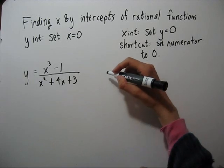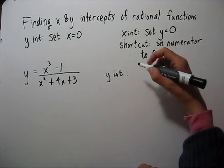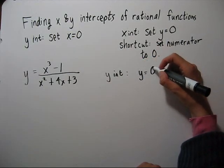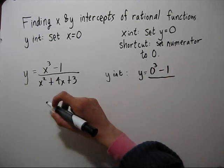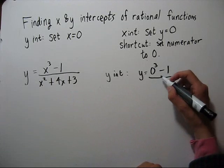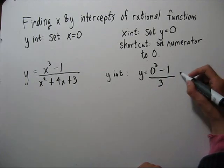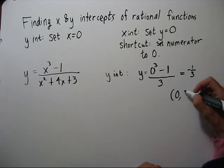First let's find our y intercept by setting x equal to zero. We're going to get y equals zero cubed minus one. Everything with an x in it is going to go to zero, so I'll just put a three down, which equals negative one third. Our ordered pair is zero, negative one third.